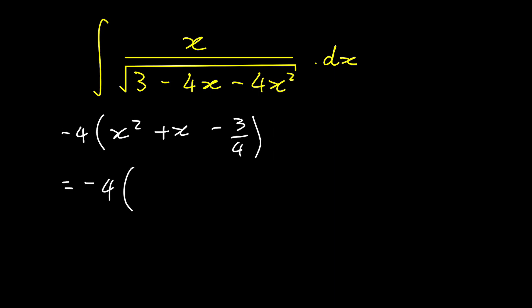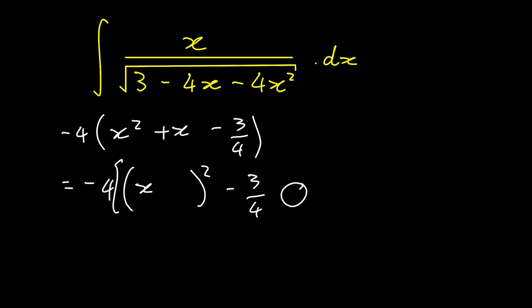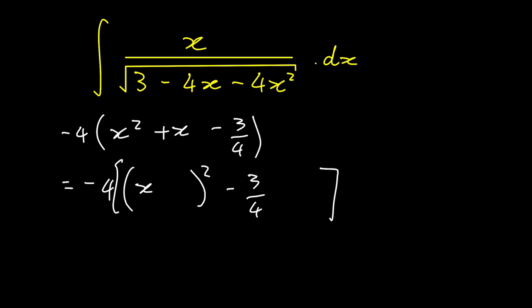Completing the square, we're going to have x with a constant, squared, minus 3 over 4 with another constant, and then all of that multiplied by negative 4. This constant we're looking for is the coefficient of x divided by 2, so that's 1 divided by 2, giving us plus 1 over 2. But we have to square it. So we added it squared, and now we subtract it out to keep the whole value the same. So we're subtracting 1 over 2 squared, which is the same as subtracting 1 over 4. And minus 3 over 4 minus 1 over 4 is minus 4 over 4, which is just minus 1.